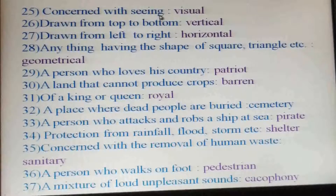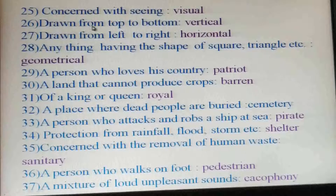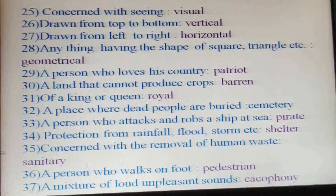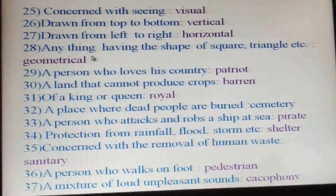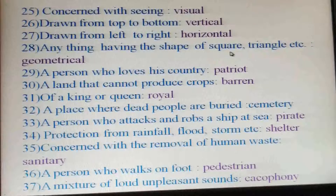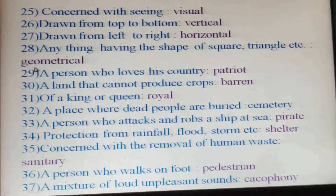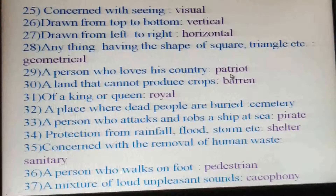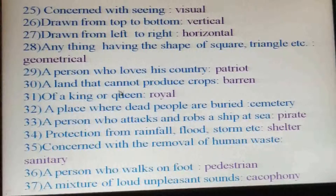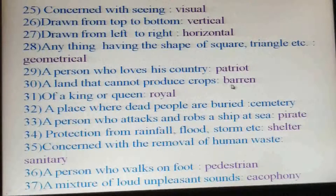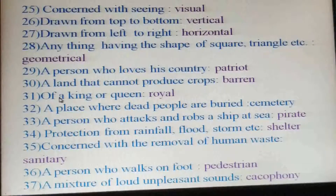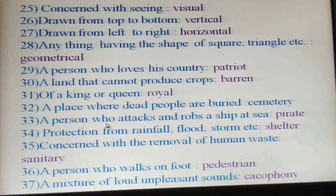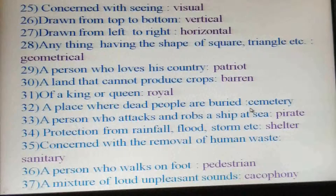Concerned with seeing: visual. Drawn from top to bottom: vertical. Drawn from left to right: horizontal. Anything having the shape of a square, triangle, etc.: geometrical. A person who loves his country: patriot. A land that cannot produce crops: barren. Of a king or queen: royal.